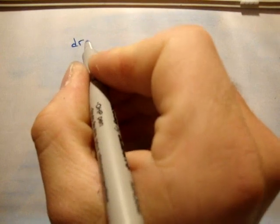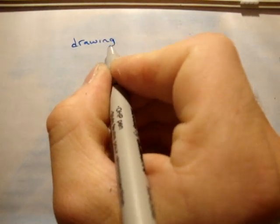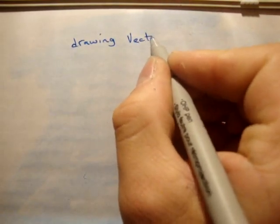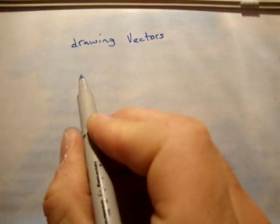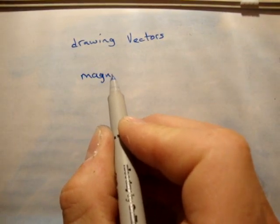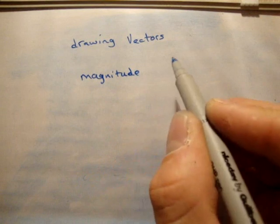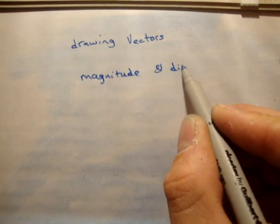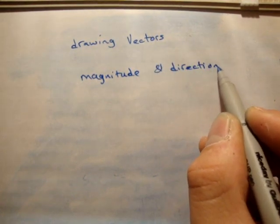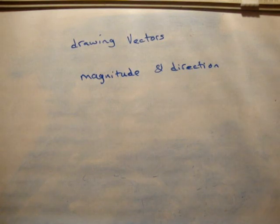In this video I'm going to talk about how to draw vectors. Now we spoke about the fact that vectors have both magnitude and they also have direction. I just want to explicitly go through how to physically draw one.